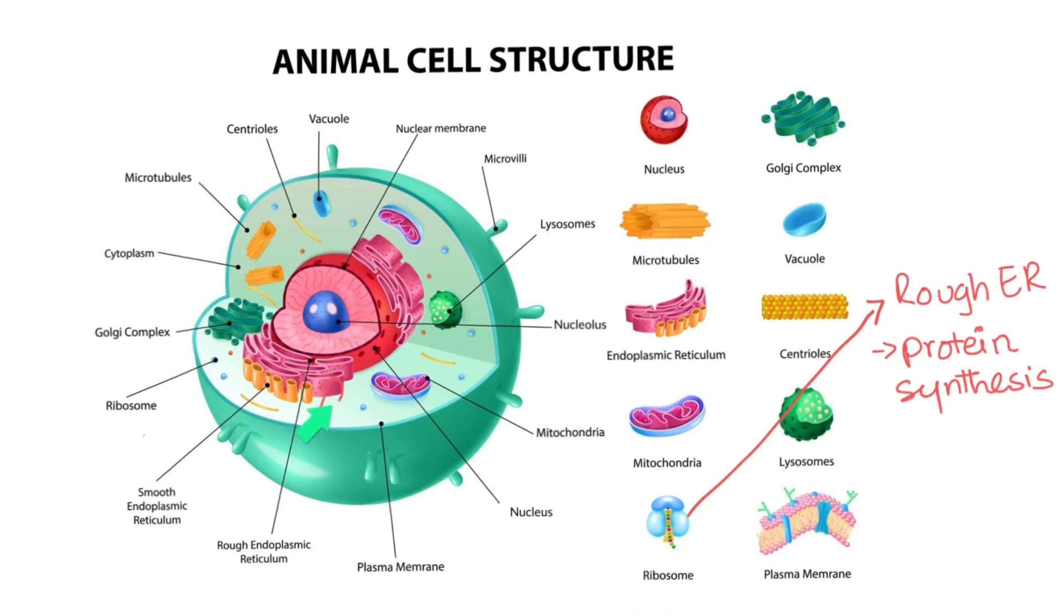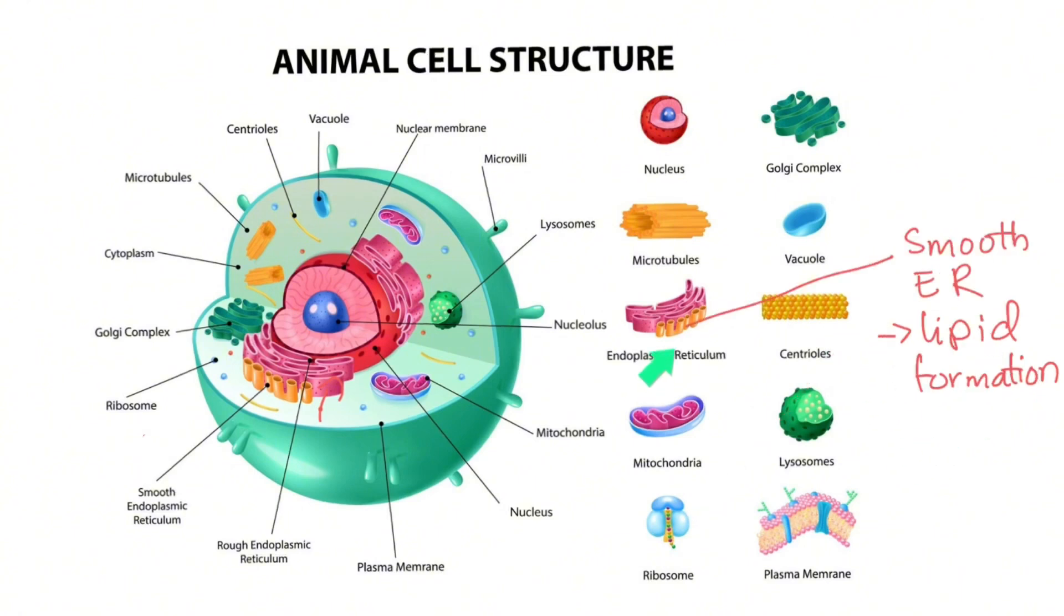The ribosomes present on rough endoplasmic reticulum is the site for protein synthesis. The smooth ER is involved in the synthesis of lipids including cholesterol and phospholipids.